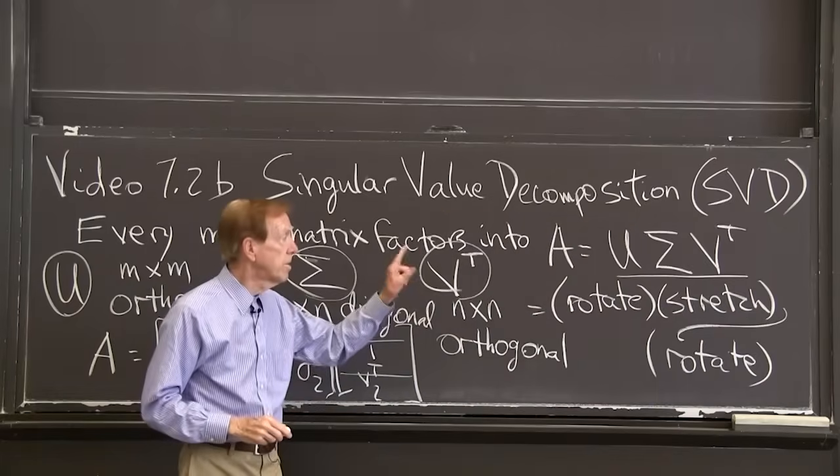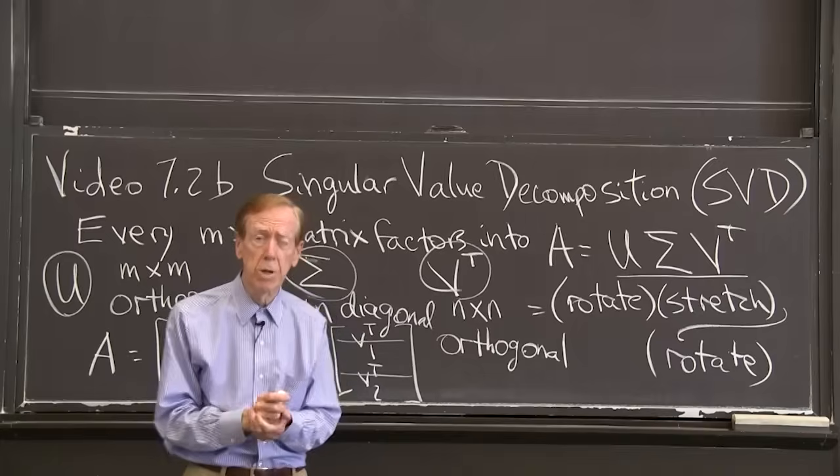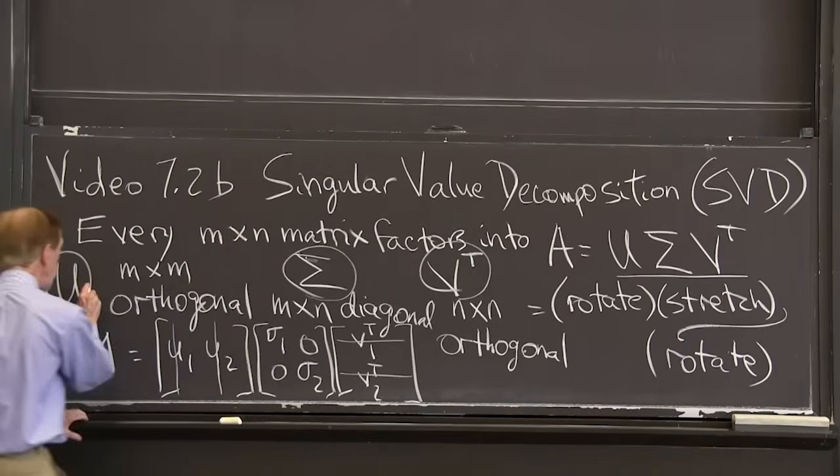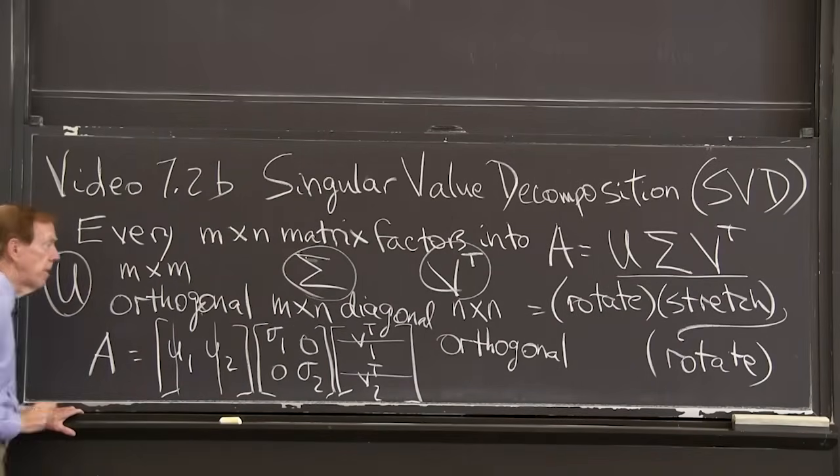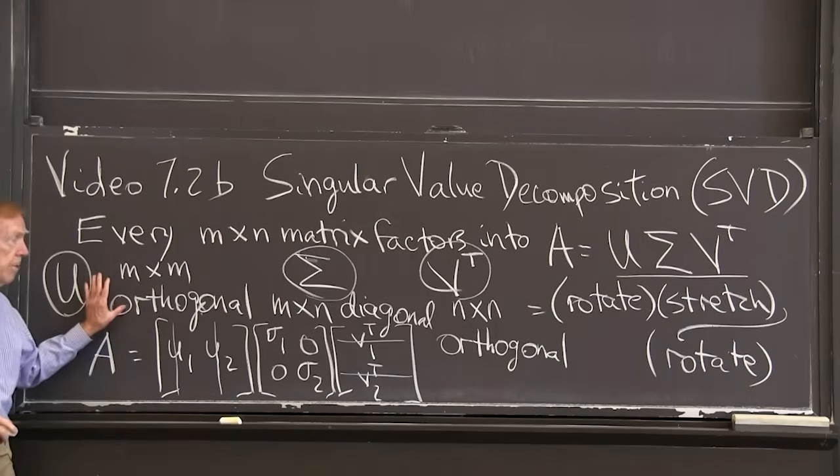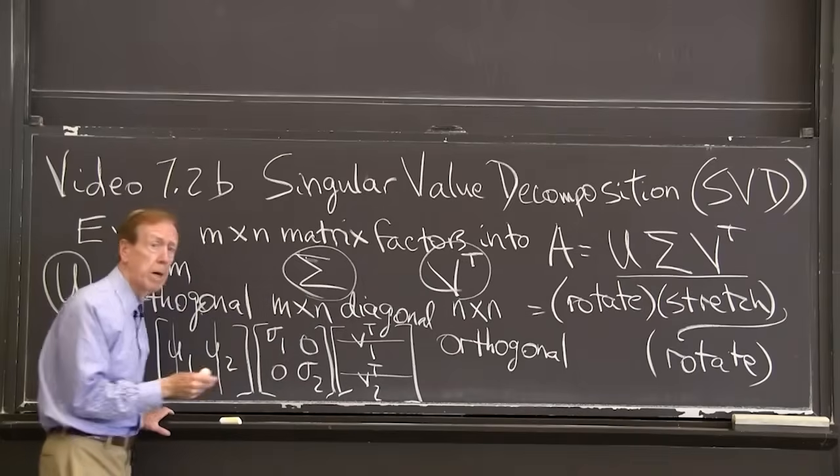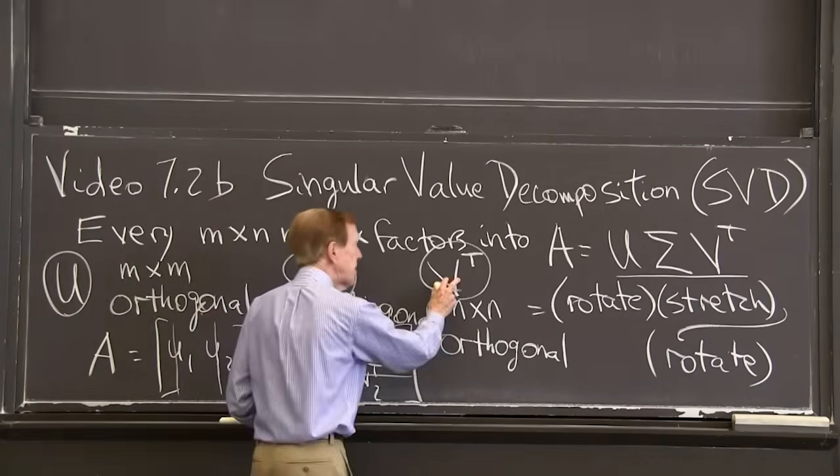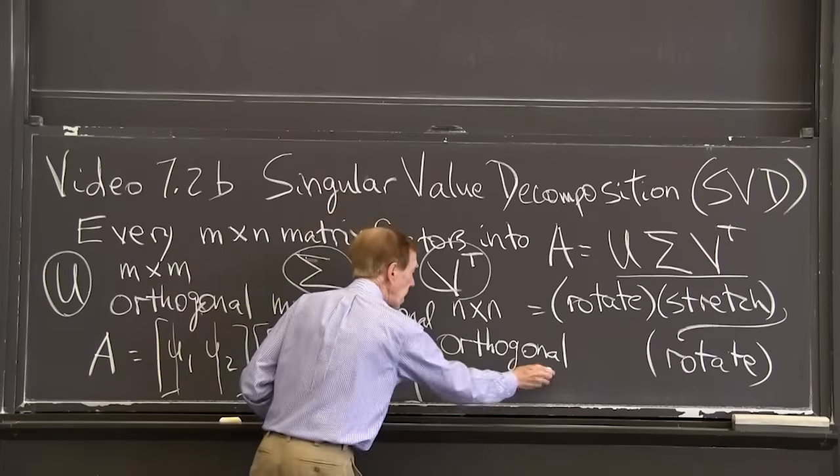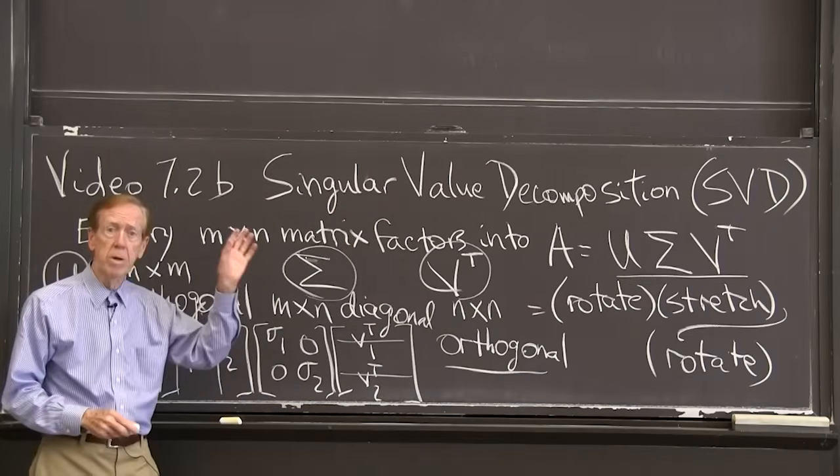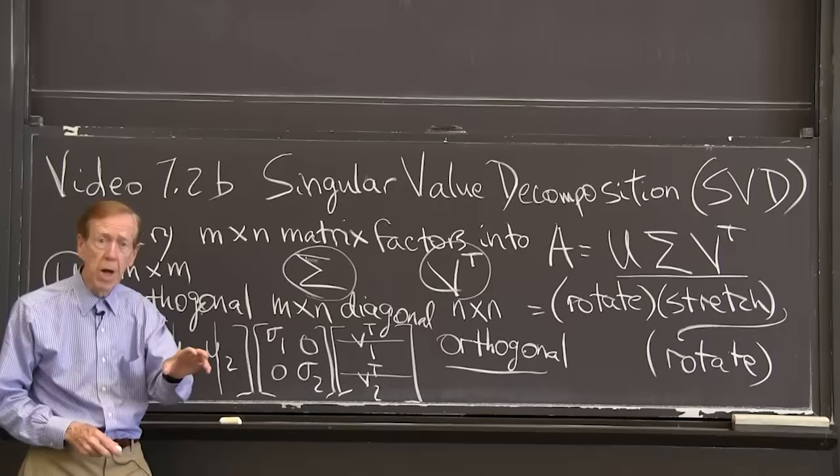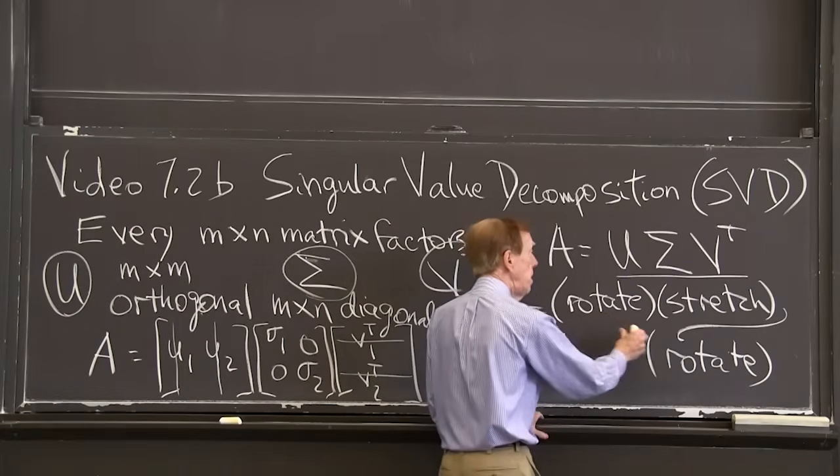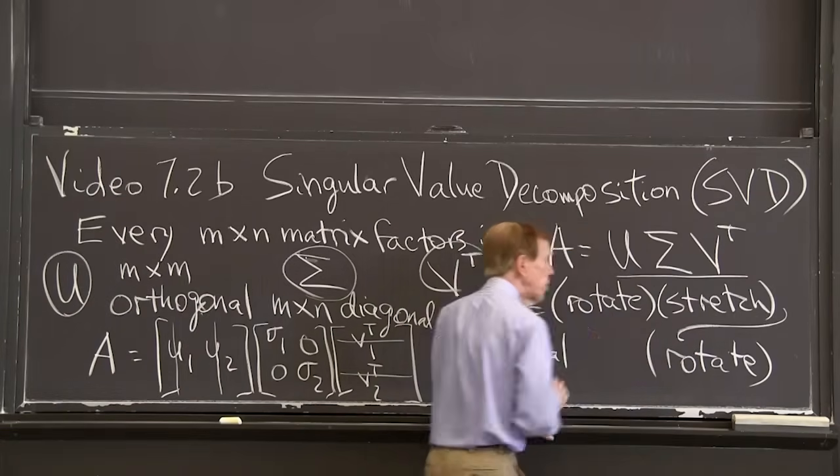U, sigma, V transpose. People use those letters for the three factors. The factor U is an orthogonal matrix. The factor sigma in the middle is a diagonal matrix. The factor V transpose on the right is also an orthogonal matrix. So I have orthogonal, diagonal, orthogonal. Or physically, rotation, stretching, rotation.